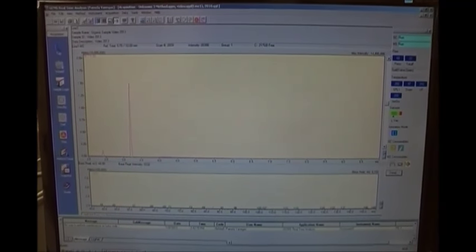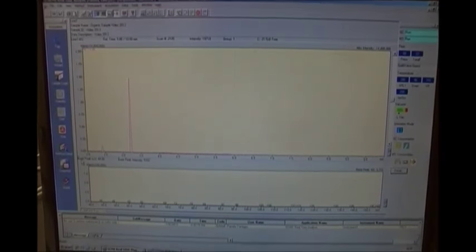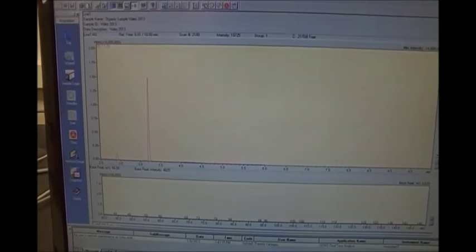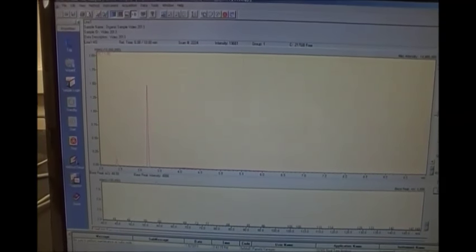Okay, so this here is the results we're getting from our GC-MS and this is in real time. If you look here, you can see that our detection starts at two minutes. This first peak here is contamination and the second peak here is the compound that we're looking for.